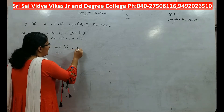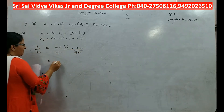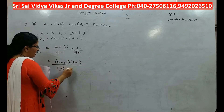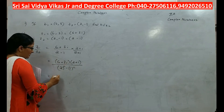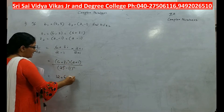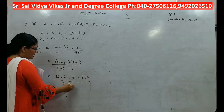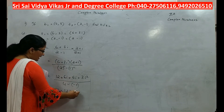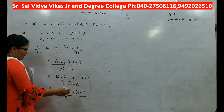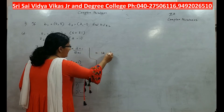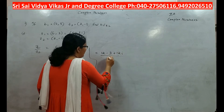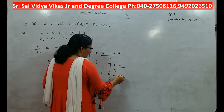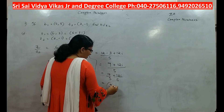Now we have to find z1 by z2, that is equal to (6 plus 3i) by (2 minus i). You have to multiply and divide with (2 plus i). This gives (6 plus 3i)(2 plus i) by (2 squared minus i squared), which is 12 plus 6i plus 6i plus 3i squared by (4 minus i squared). Since i squared equals minus 1, this becomes 12 plus 12i plus 3 times minus 1, all over 5. So this is 12 minus 3 plus 12i, all by 5, which gives 9 plus 12i by 5, or (9/5, 12/5).